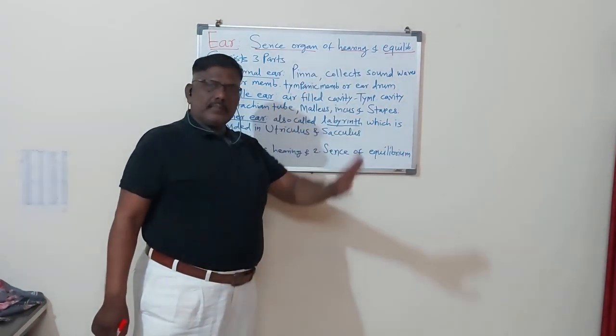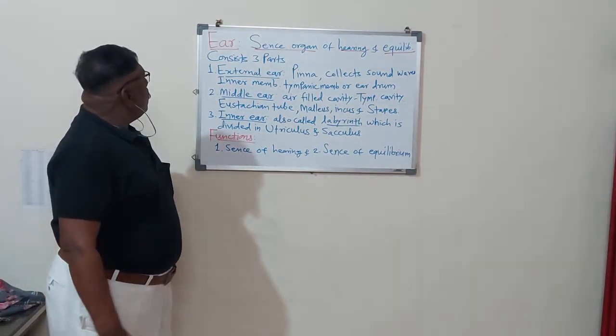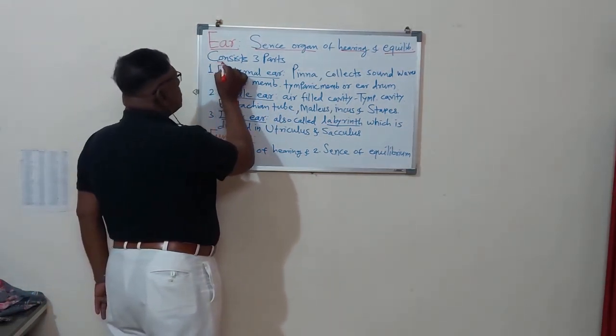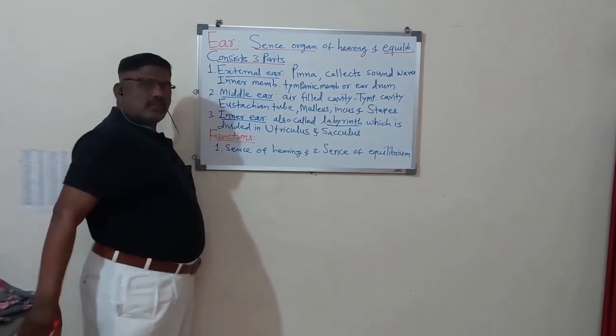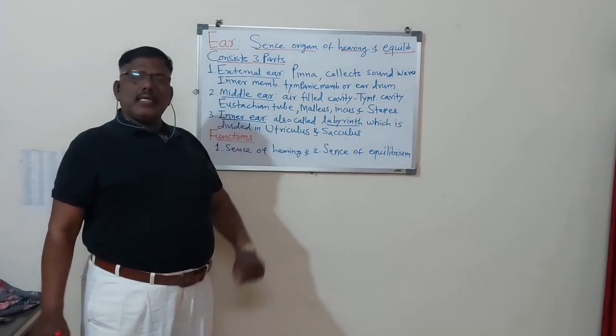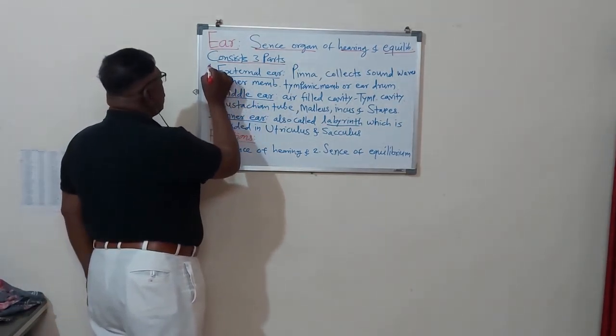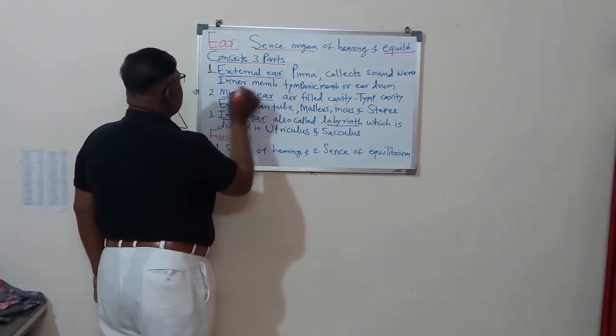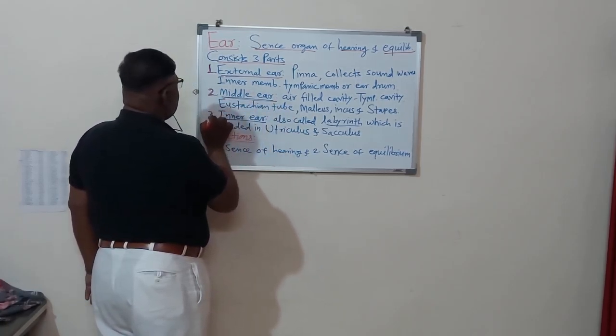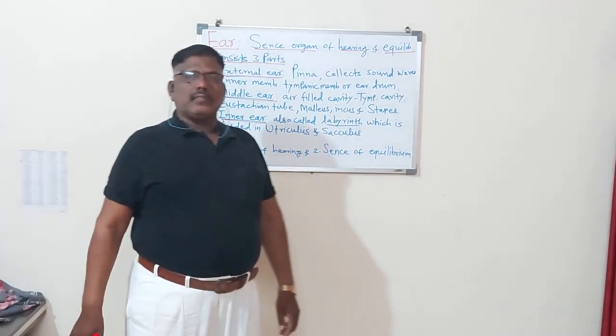Hearing and equilibrium is the function of the ear. Now ear of rat consists of three parts. In the ear there are three parts. So that three parts are the first one, that is the external ear, second one that is the middle ear, and third one is the inner ear.